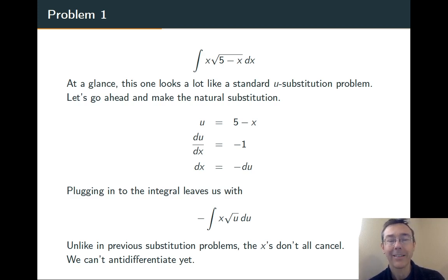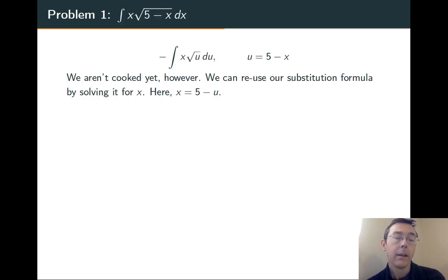So hopefully we can get that x out somehow. Here we can do it. And the reason is that that relationship, u equals 5 minus x, that we started with, can be turned around. It can be solved for x. And so when we write x equals 5 minus u, we're actually able to plug that in for that x that remains in our integrand.